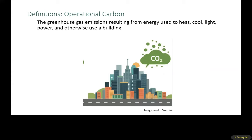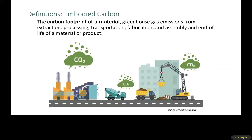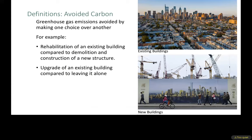Beyond operational and embodied carbon, I'm also defining what I call avoided carbon — the emissions avoided by making one choice over another. For example, rehabilitating an existing building compared to demolishing and building a new one, or upgrading an existing building compared to leaving it alone. You can look at the savings from those choices.